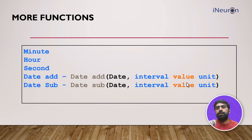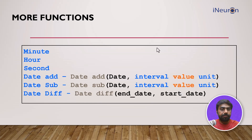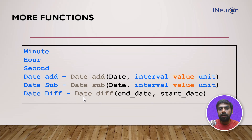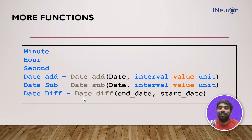DATE_ADD adds a certain number of days to a date. DATE_SUB works the opposite way — it subtracts and takes the date back. Similarly, there's DATE_DIFF, which takes the difference between two dates. The start date minus the second date gives the difference reflected in this function. Apart from minute, hour, second, year, month, and day, it can also reflect the week number and the weekday.